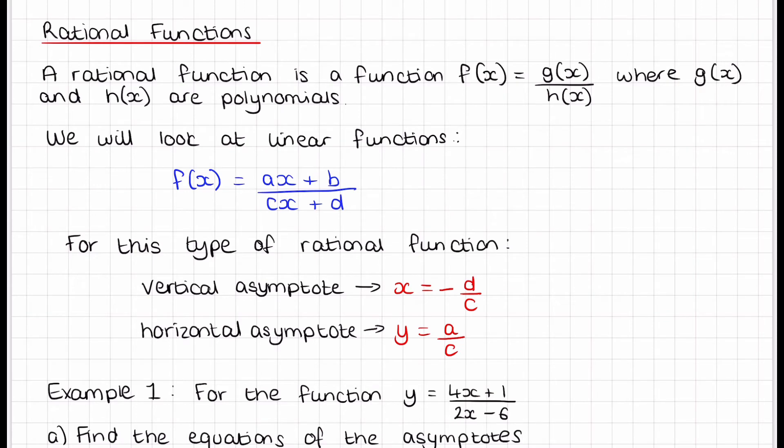Now a rational function is a function where we have a function on the numerator and a function on the denominator, and those functions are polynomials. We are going to look at linear functions like the one in blue here where the function equals ax plus b over cx plus d. For this type of rational function, the vertical asymptote is at negative d on c, but once again you could also make the denominator equal 0 to work that one out. The horizontal asymptote is a divided by c, so you look at the values with the x's and you divide the numbers in front of the x's.